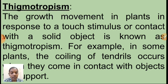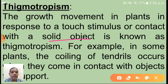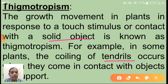Thigmotropism — the growth movement in plants in response to a touch stimulus or contact with a solid object is known as thigmotropism. For example, in some plants the coiling of tendrils. In creeper plants, the tip region is curled into a coiling structure called tendrils. Tendrils occur when they come in contact with an object for support, take support from the solid object, and then grow. That movement is called thigmotropism.